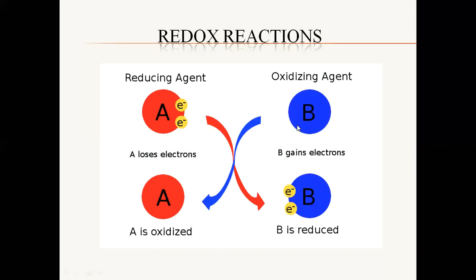Now let's come to the reduction. This is the oxidizing agent — it will gain the electron. This substance has gained the electron, so this process is known as reduction. Why is this known as reduction? Because substance B has gained the electrons. So the gain of electrons is known as reduction, and the loss of electrons is known as oxidation.